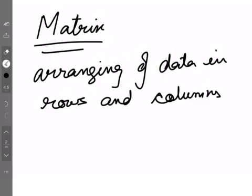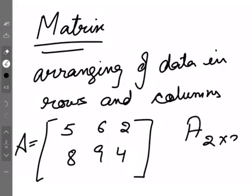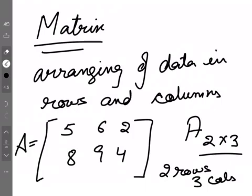So arranging of data in rows and columns. For example, if I have these numbers, this is said to be a matrix. Let's say I have a matrix of size 2 by 3. Two by three means two rows and three columns. These are horizontal ones we call rows and these are called columns.